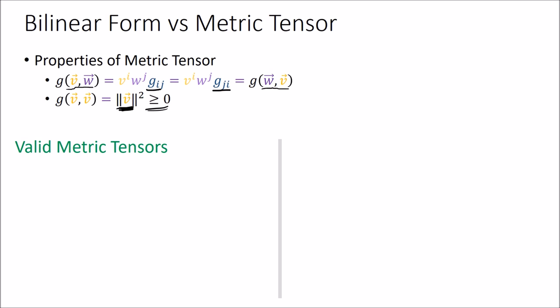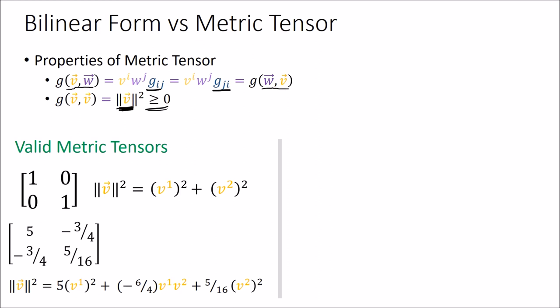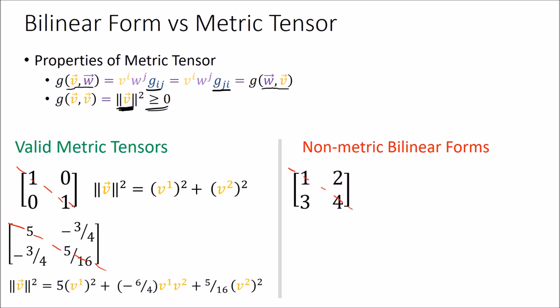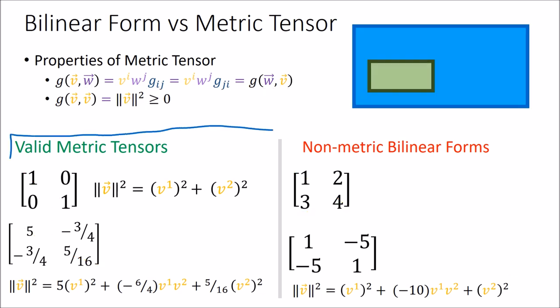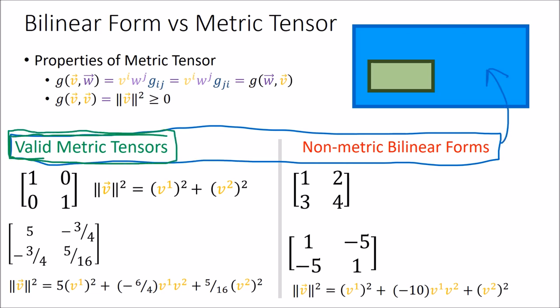So certain bilinear forms are valid metric tensors and others aren't. For example, the two matrices discussed in the previous video are valid metric tensors — they have symmetric matrices, and when we put the same input in twice we always get non-negative answers. You can try any v1 and v2 you like in those formulas; the answer will always be positive or zero. On the other hand, some bilinear forms aren't valid metric tensors. One example is clearly not symmetric, so it fails immediately. Another example has a symmetric matrix but it's possible to get a negative output with certain v1 and v2 — for instance, input components of 1 give a result of negative 8. So metric tensors are a special subset: if the large box is the set of all bilinear forms, the smaller green box inside is the set of all metric tensors.